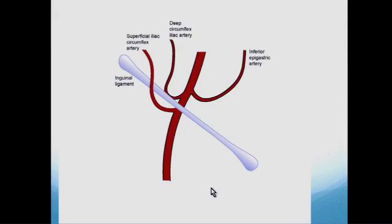Starting on the femoral artery and vein, follow the femoral artery up until you see the superficial iliac circumflex artery going laterally. Go up a little further and the next laterally proceeding artery is the deep circumflex iliac. Go up a little more and you'll find the inferior epigastric artery — that's the marker for your deep ring.